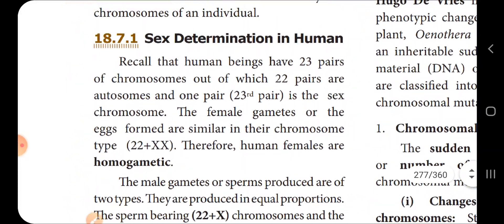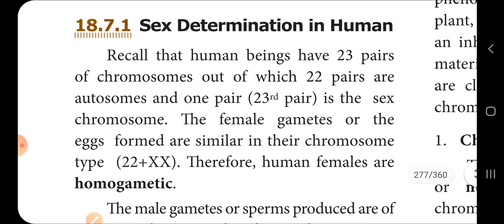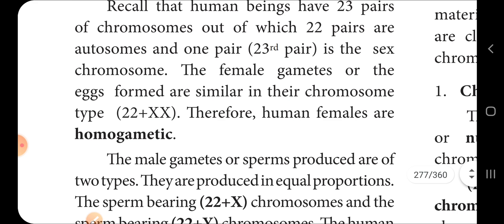Sex determination in humans: human beings have 23 pairs of chromosomes, out of which 22 pairs are autosomes and one pair are sex chromosomes. The female gametes are similar type, homo-gametic, with the chromosome composition 22 plus XX.